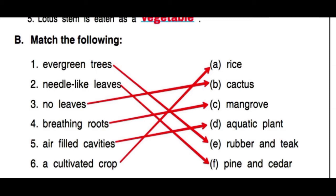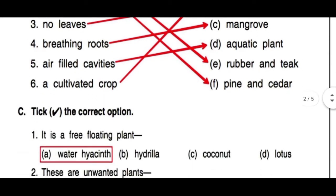And fifth is air-filled cavities — air-filled cavities are found in aquatic plants. And a cultivated crop — rice is a cultivated crop.